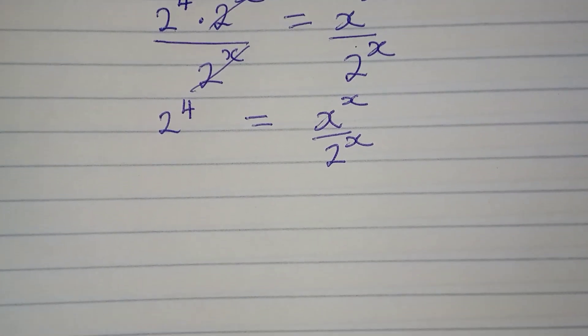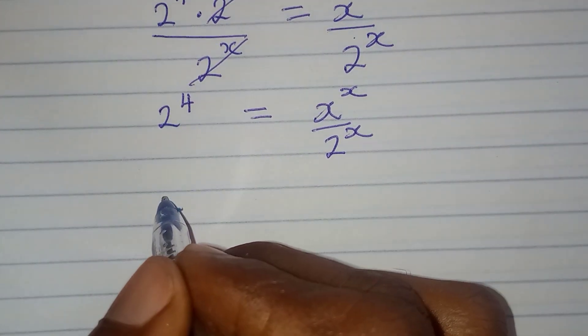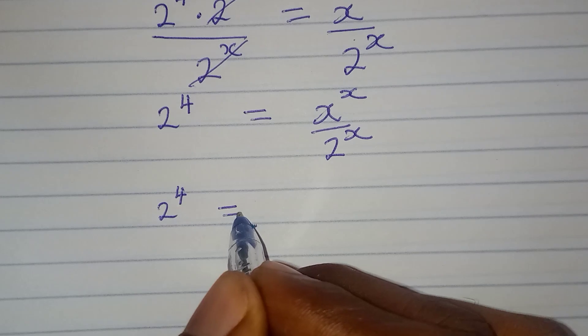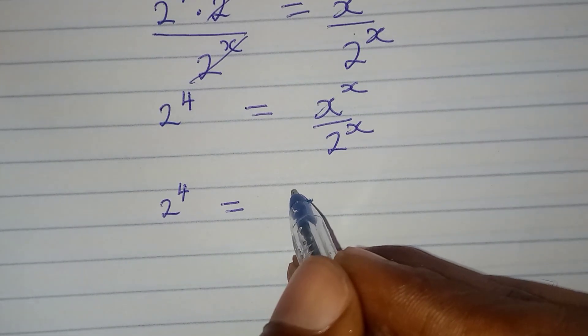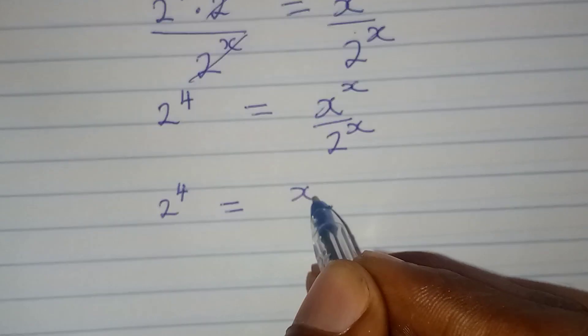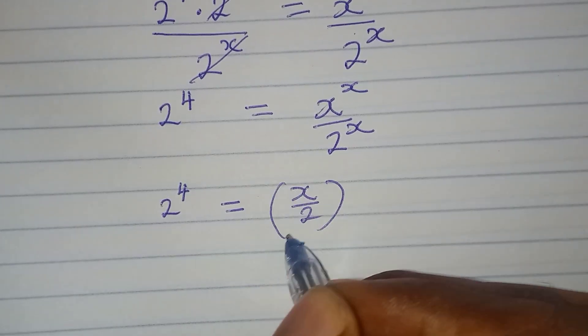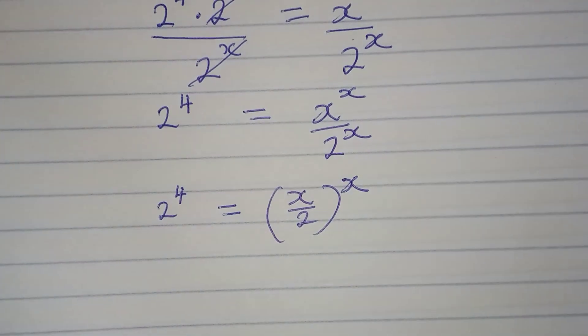Okay, I'm going to work on the right hand side. Here we have 2 to the power of 4, and it's equal to - now because we have the same power, I can combine them - so I have x over 2 to the power of x.